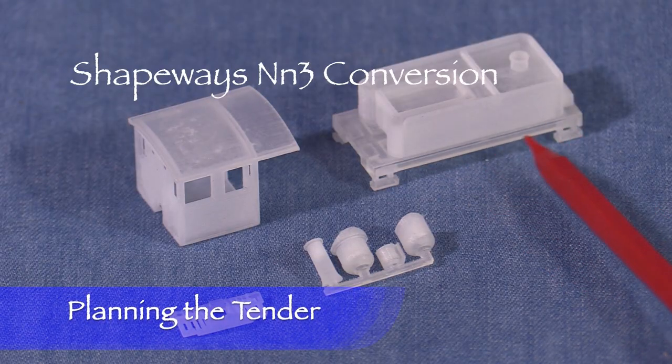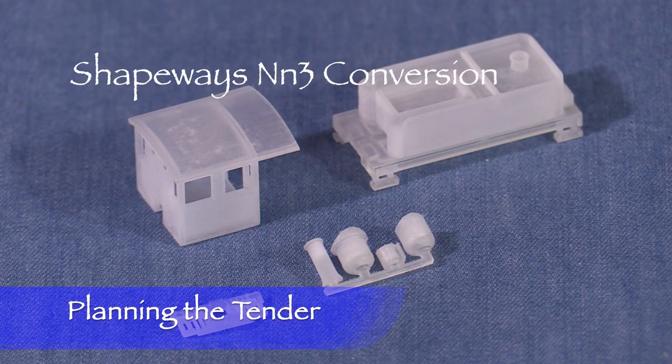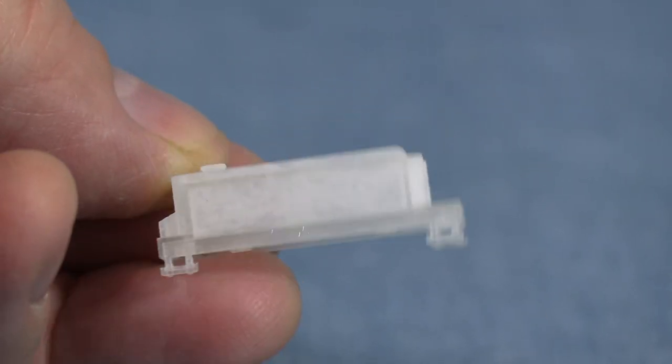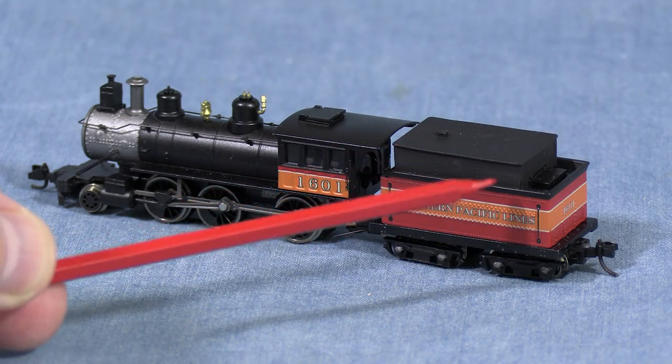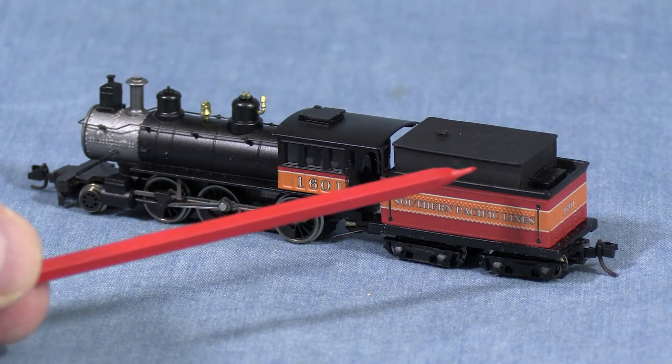On Shapeways, I found something being sold as NN3 conversion parts. The set includes a tender body. The tender body is nicely modeled, if a little on the small side. Since I want my engine to represent something typical of the West Coast, it would need to be converted to an oil tender.